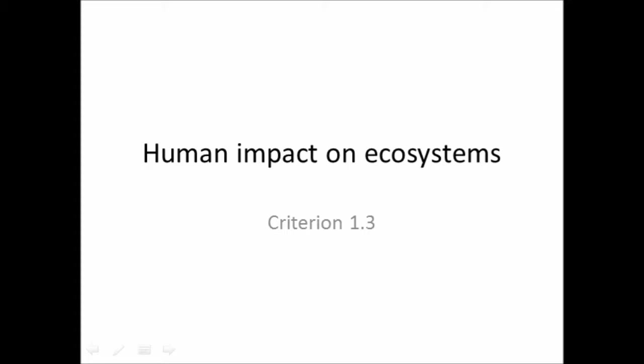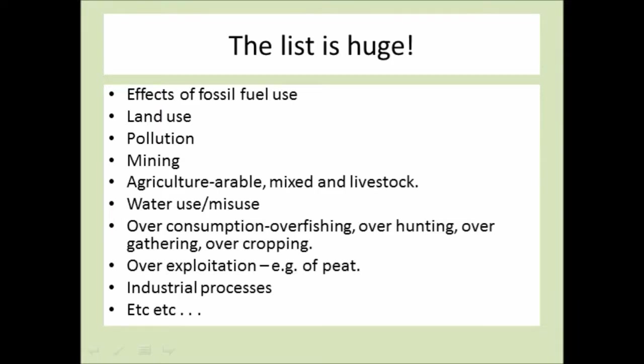There are lots and lots of other ways that humans can impact on ecosystems. Some of them bad, some of them neutral, some of them quite good. So there's just a list there of some of the things. I won't bother reading through it. I'm just going to look at three of those and just briefly consider the aspects of them. So the ones I want to look at are land use, pollution and mining.